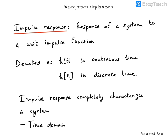The impulse response completely characterizes a system in the time domain using the convolution operation.